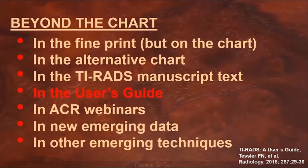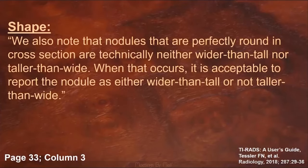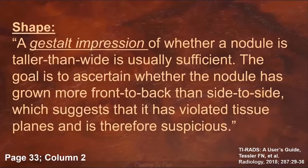Another manuscript designed to help with implementation and use of TI-RADS is the user's guide. When it comes to shape, the user's guide states that nodules that are perfectly round in cross-section are technically neither wider than tall nor taller than wide. When that occurs, it is acceptable to report the nodule as either wider than tall or not taller than wide — either way, it gets zero points rather than three points. The user's guide also states that a gestalt impression of whether a nodule is taller than wide is usually sufficient. The goal is to ascertain whether the nodule has grown more front to back than side to side, which suggests that it's violated tissue planes and is therefore suspicious. My personal belief is that visual inspection is not only sufficient, but is often preferable to a strict reliance on measurements for a concept that's inherently nuanced like nodule shape.